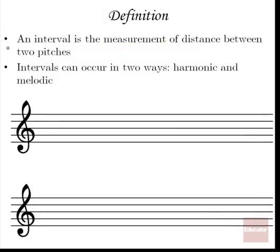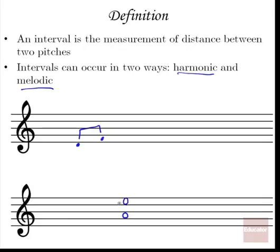An interval is the measurement of distance between two pitches, and these two pitches can occur in two different ways: harmonically or melodically. For instance, if I notate a D here and an F here, that would be a melodic interval because the notes are happening one after another, like a melody. A harmonic example would be an interval of A to E happening simultaneously — that's a harmonic interval.